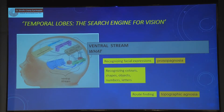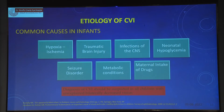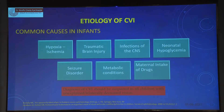Other functions in the temporal lobes include recognizing facial expressions and recognizing colors. Most of the time the neurologist can't help us with these findings. Our most common causes found were mainly hypoxia and hypoglycemia. Our hospital department headed by Dr. Sovita found that most of the time she gets infection of the CNS, traumatic brain injury, or seizure disorder as the other causes for CVI.